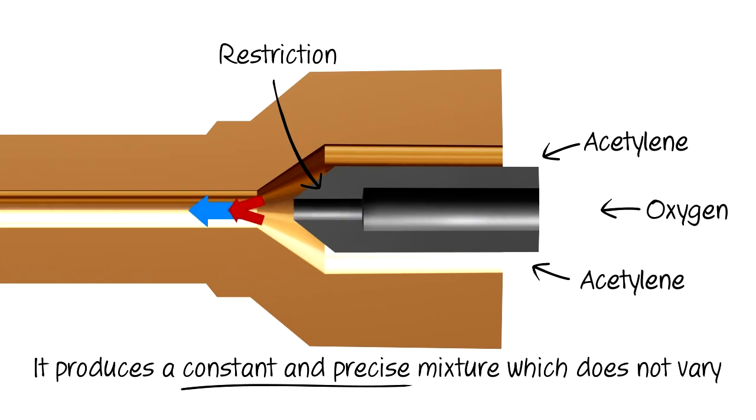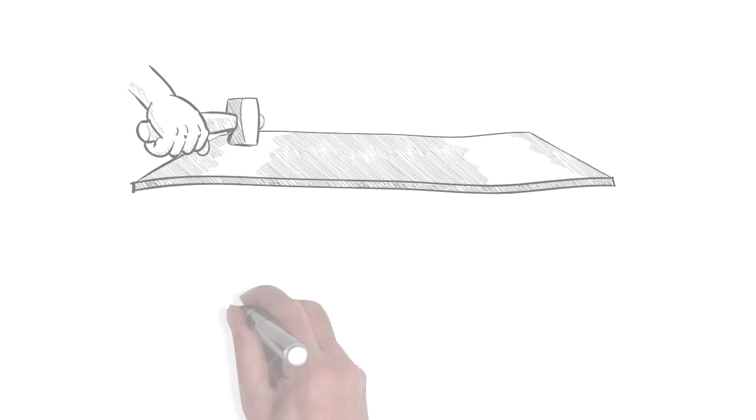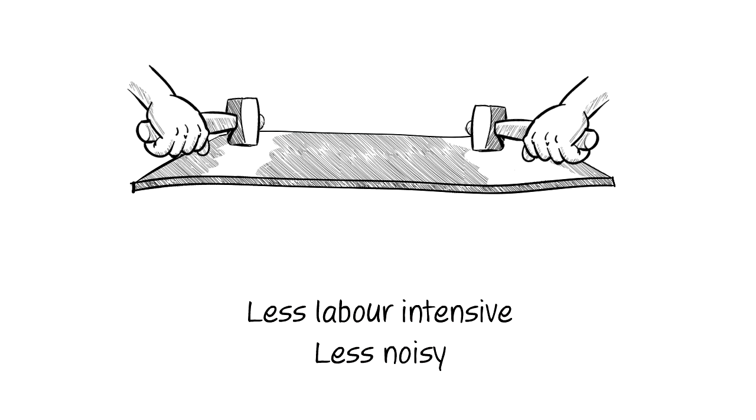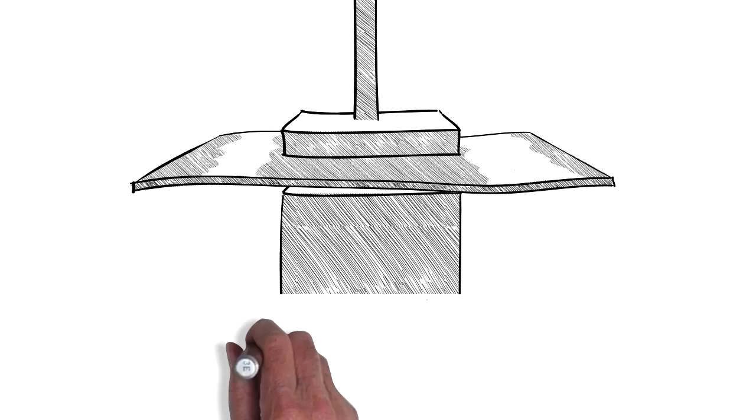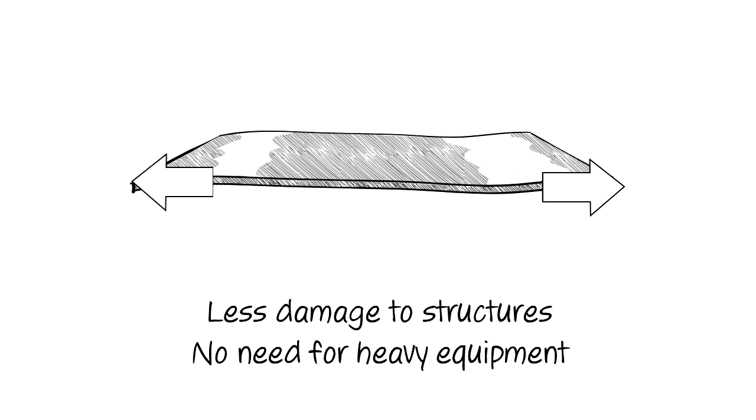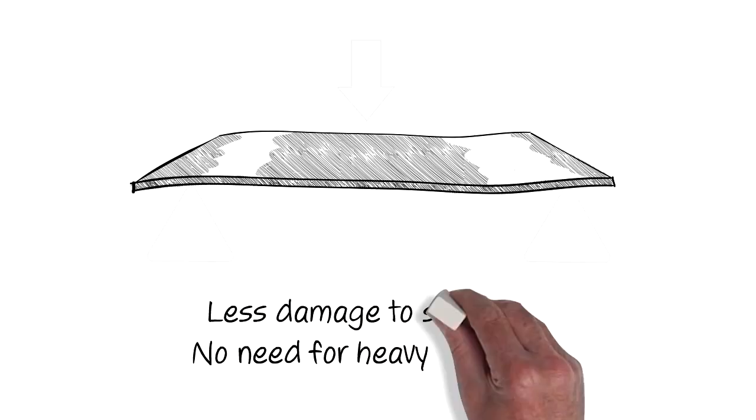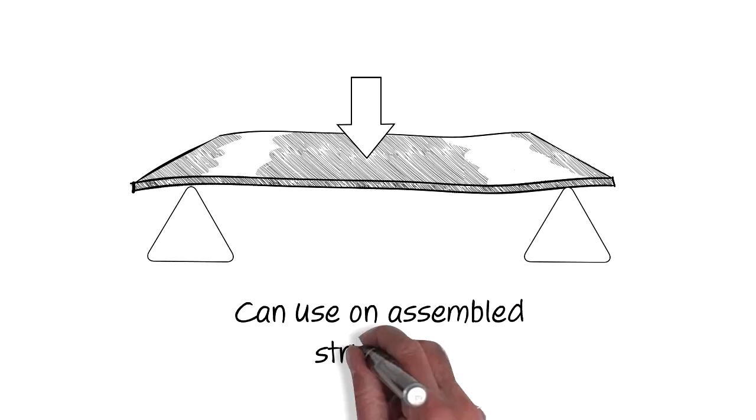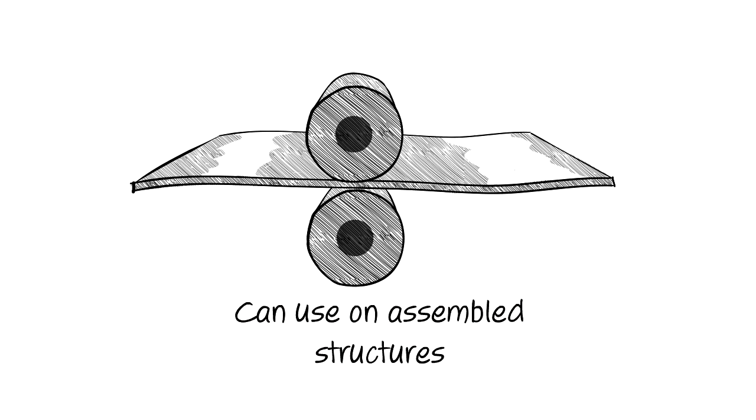So why use flame straightening? It has many advantages over mechanical methods. It's less labour intensive and less noisy than hammering. There's less chance of damage to the structure and no need for heavy equipment like jacking. And you can use it on assembled structures, unlike rolling.